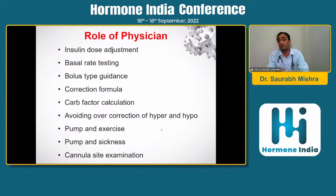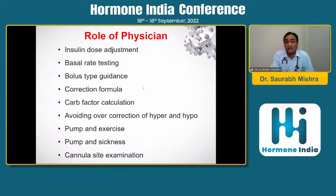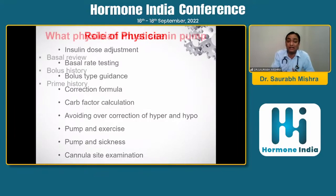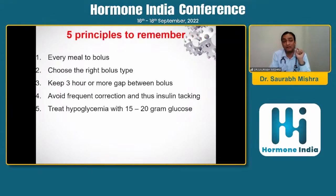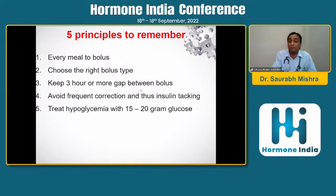The role of the physician includes insulin dose adjustment, basal rate testing, bolus type guidance, correction formulas, carb factor calculation, avoiding overcorrection, managing hypers and hypos, explaining pump use during exercise and illness, and examining cannula sites. Three basic things to review in every pump visit: basal review, bolus history, and priming history. Five principles for success: bolus for every meal, choose the right bolus type, keep three or more hours gap between boluses, avoid frequent corrections and insulin stacking, and treat hypoglycemia only with glucose.